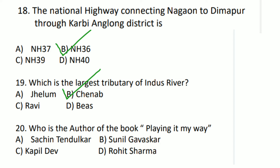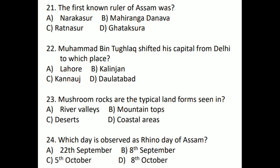Who is the author of the book 'Playing It My Way'? The answer is Option A — Sachin Tendulkar. Next question: The first known ruler of Assam was whom? The answer is Option B — Mahiranga Danav.